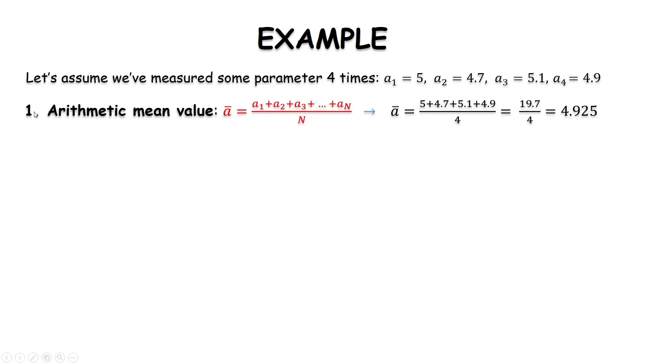First, we are going to calculate arithmetic mean value. We simply sum all these four values and divide by four since we measured four times this parameter. And the final answer for the arithmetic mean value is 4.925.